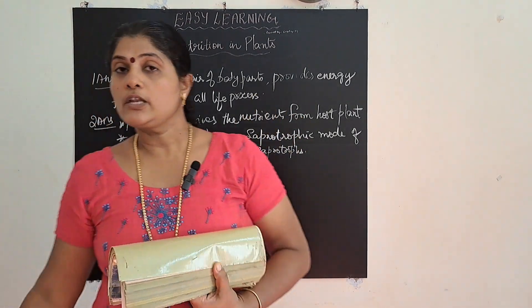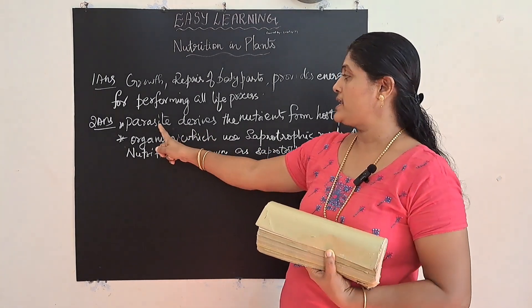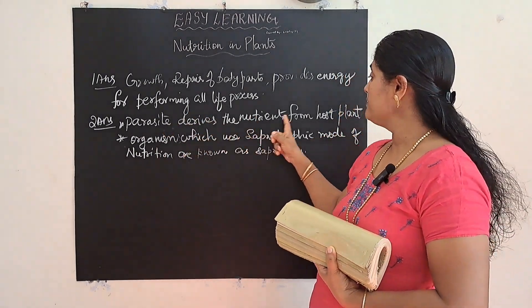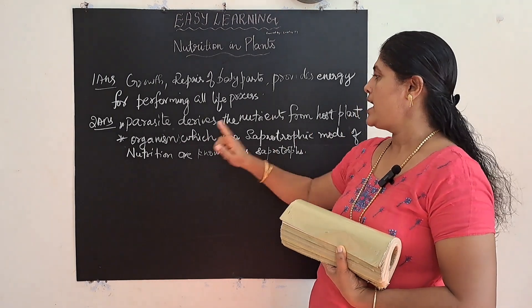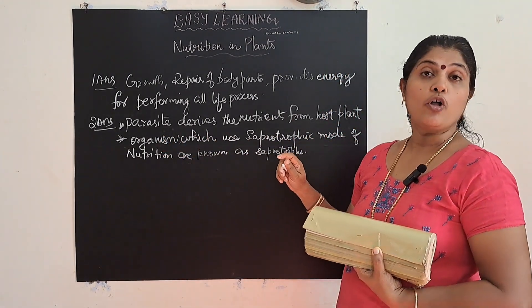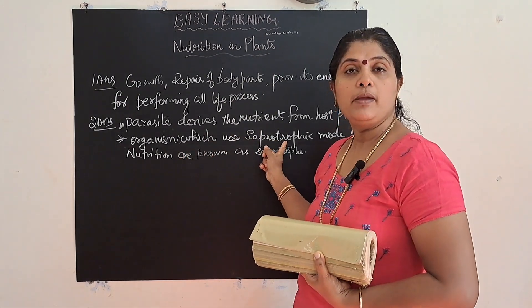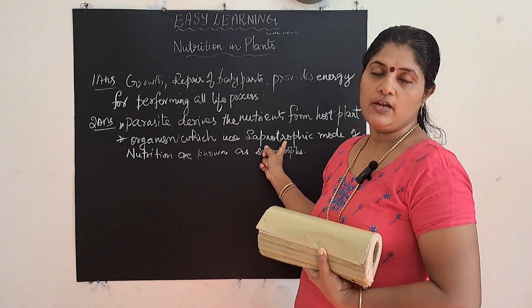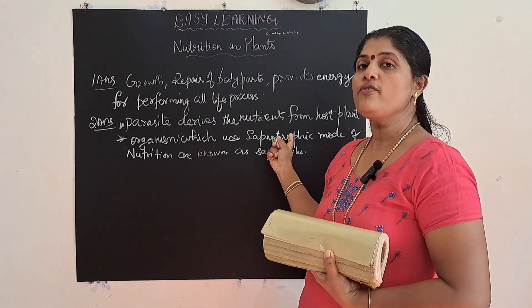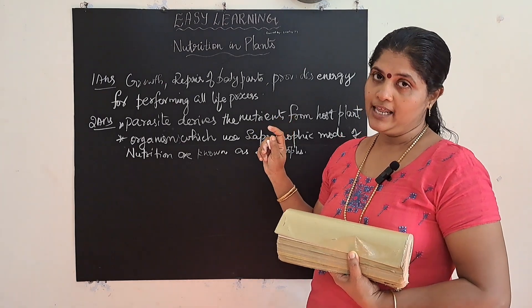A saprotroph is an organism which uses the saprotrophic mode of nutrition. Saprotrophic mode of nutrition means the mode of nutrition in which the organism consumes nutrients in the form of a solution from dead and decaying organic matter.